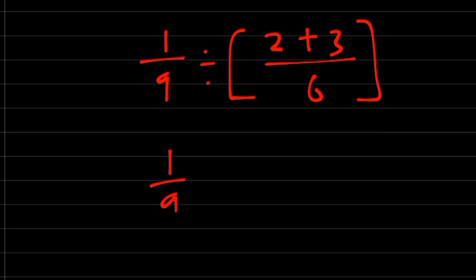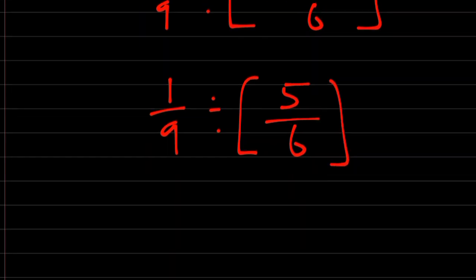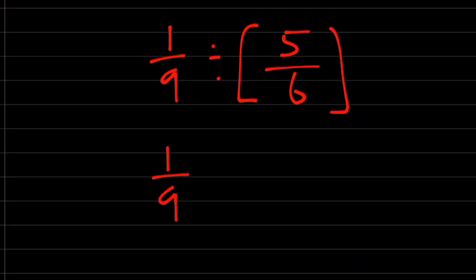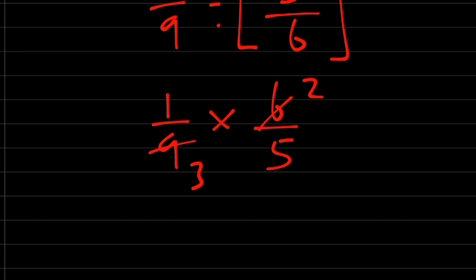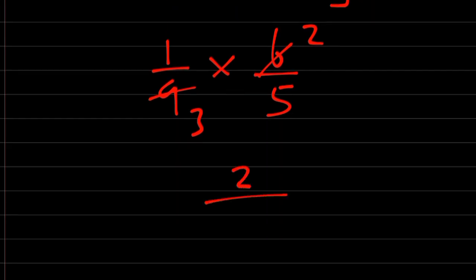Therefore, we have 1/9 divided by 5/6. This is 1/9 times 6/5. We simplify by canceling 3s from 9 and 6. We are left with 2/15. The answer is 2/15.